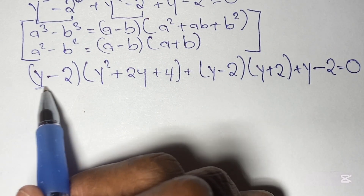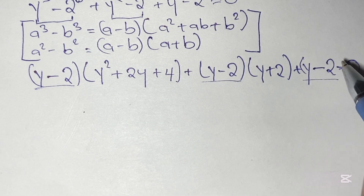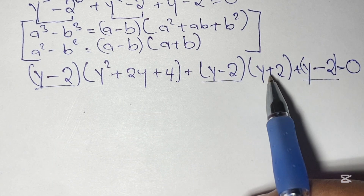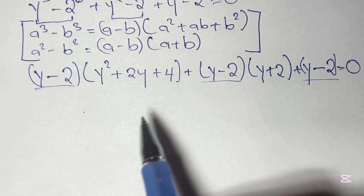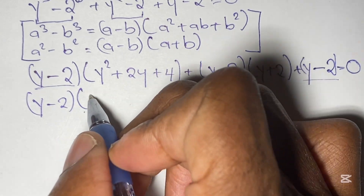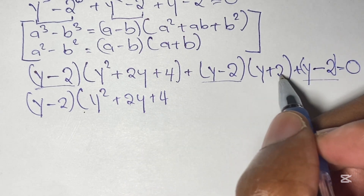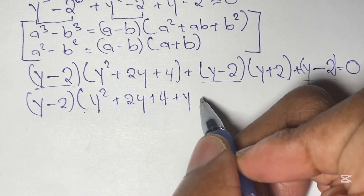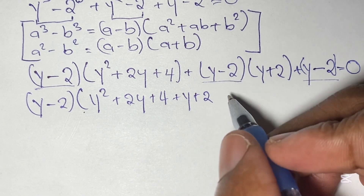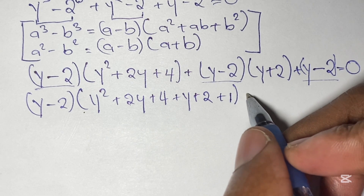Now we notice that (y minus 2) appears in all three parts of our expression. So we can factor out (y minus 2). Factoring it out gives us (y minus 2) times the quantity: y squared plus 2y plus 4, plus y plus 2, plus 1, all equal to 0. Since y minus 2 times positive 1 gives us y minus 2.